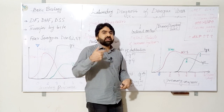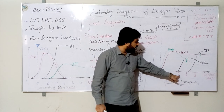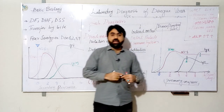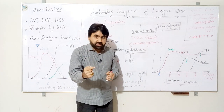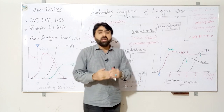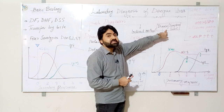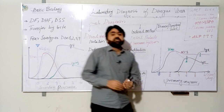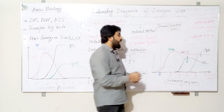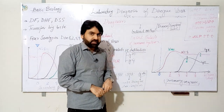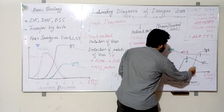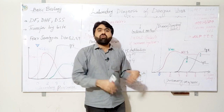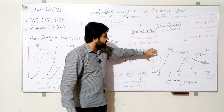In primary infection, IgM — which is produced first in the primary response — appears in the blood at approximately five days after the onset of symptoms and can be detected for up to 45 to 50 days. IgG appears after six to seven days from the onset of symptoms and can be detected for many years or for the rest of the patient's life.